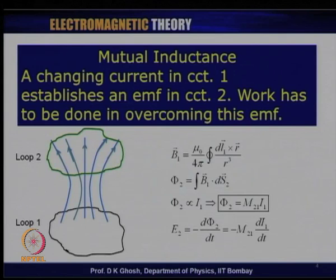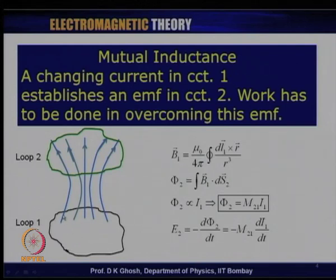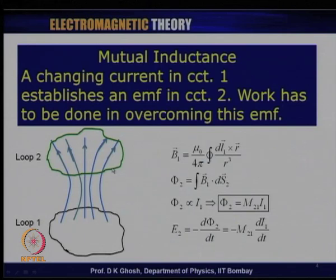Let me introduce the concept of inductance. Suppose I have two circuits — loop 1 and loop 2. Let us suppose there is a current flowing through loop 1 and this current is changing with time. As a result, the magnetic field it produces changes with time, and loop 2 is a loop which intersects these magnetic field lines. So as the magnetic field strength produced by the first loop changes, it results in a change of flux in the second loop.